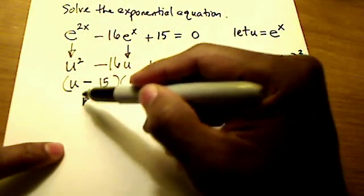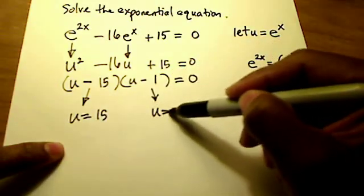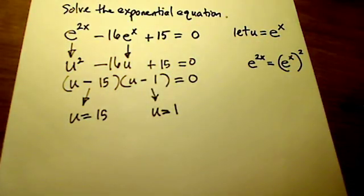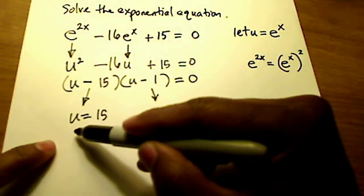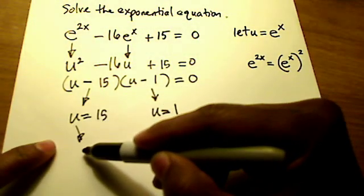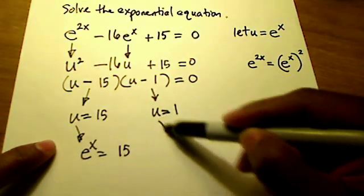Alright, so it's easy to see that I've got two answers of 15 and 1 out of those two parentheses. But we're not looking for u, we're looking for x. So I need to back substitute into these two answers, into these two equations, what u actually is, which is e to the x.